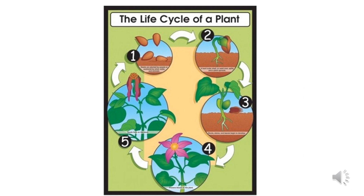Now I am going to tell you about the life cycle of a plant. Follow along very carefully. Start with number one, then go to number two, number three, number four, and then number five. Seeds are produced from the flower. The seed cracks and a tiny shoot appears. The shoot continues to grow and the roots burrow down into the soil. The plant gets taller, leaves sprout from the stem, and a flower grows. The flower produces seeds to start the process all over again.